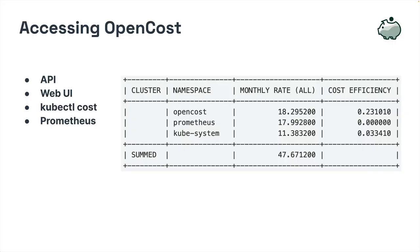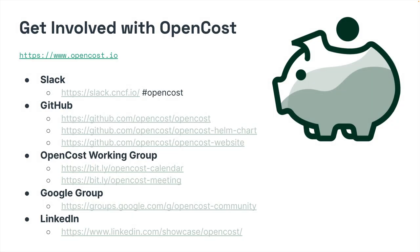Once you've deployed OpenCost, you'll start collecting data almost immediately. Showing cost by any dimension enables action, and fitting allocation, tagging, and mapping into developer workflows is very powerful. Cluster cost efficiency is a great starting point for Kubernetes cost optimizations. The OpenCost API exposes cost allocations for Kubernetes workloads and the cloud infrastructure supporting them. There's a Swagger JSON in the OpenCost repository and additional API documentation in development. There's also the web UI, and KubeCuddleCost is a CLI plugin for interacting with the OpenCost API. You can always access Prometheus directly as well. The OpenCost community continues to expand and we're mostly in Slack and GitHub with fortnightly OpenCost working group calls. There's also a Google group and LinkedIn, plus links for the OpenCost calendar and meeting notes if you want to get involved in the OpenCost working group.